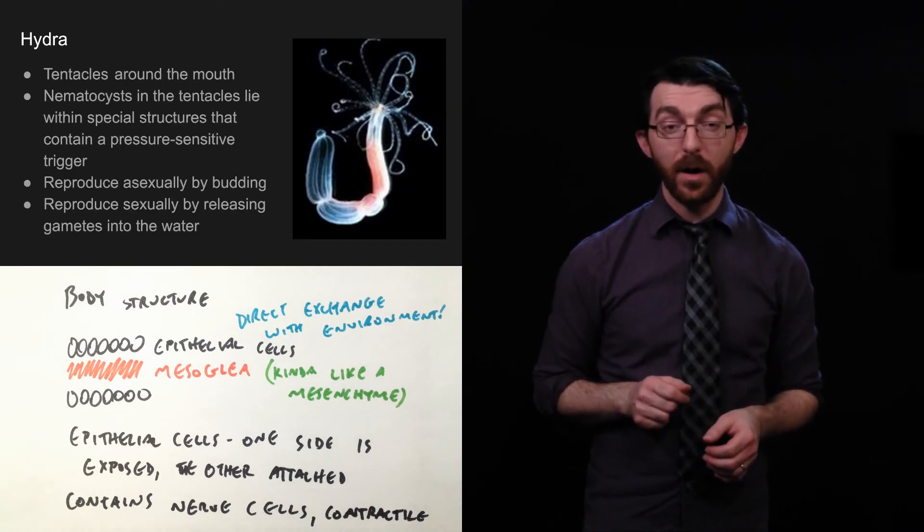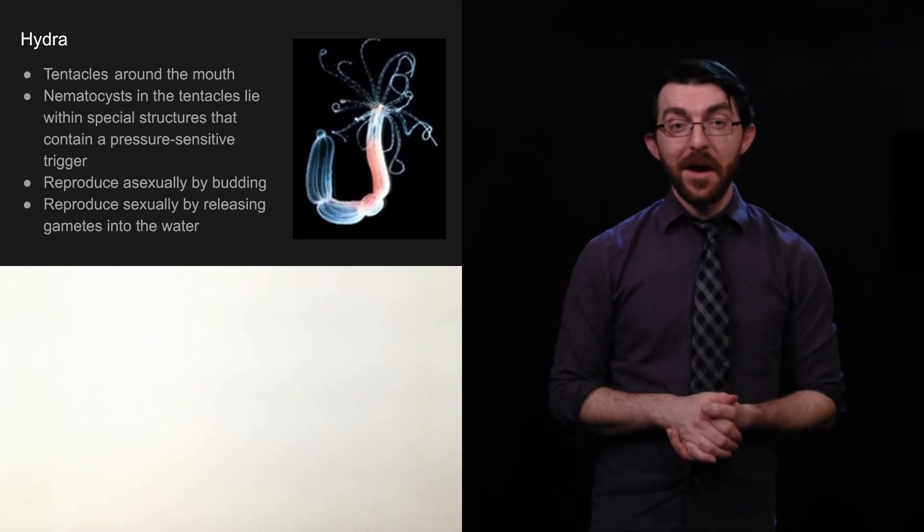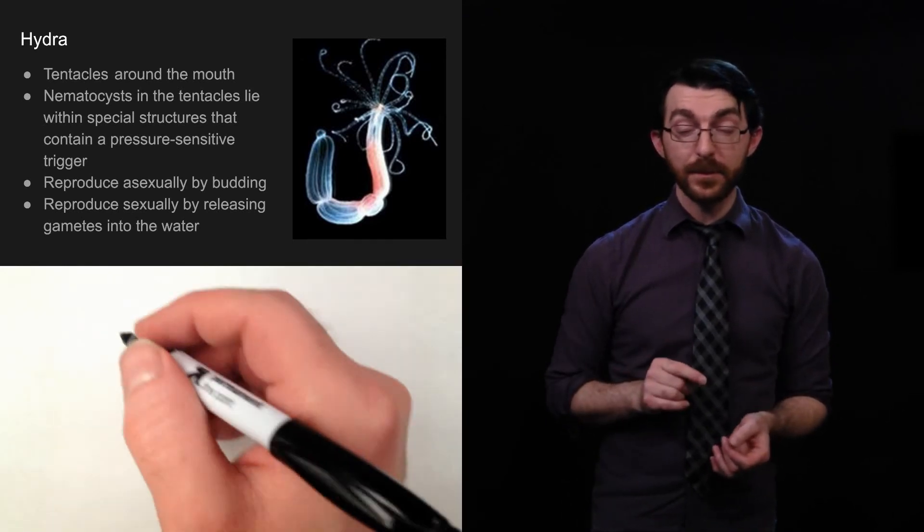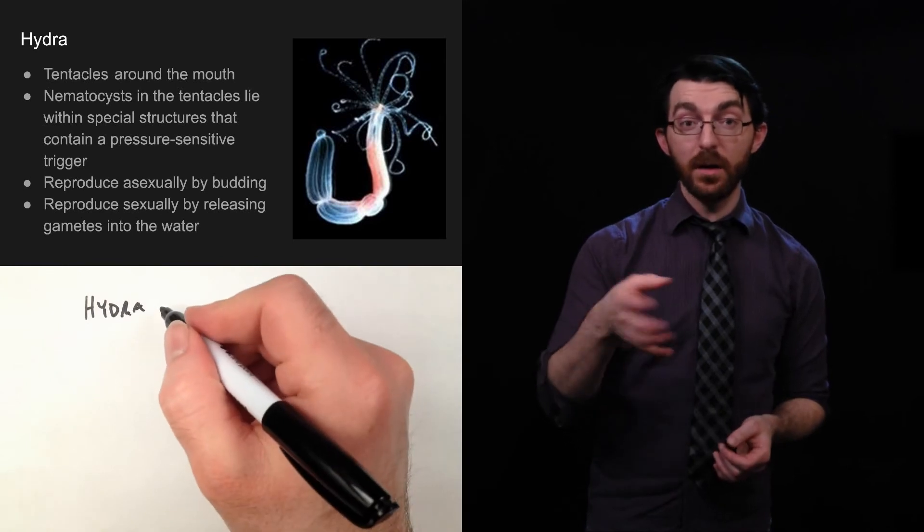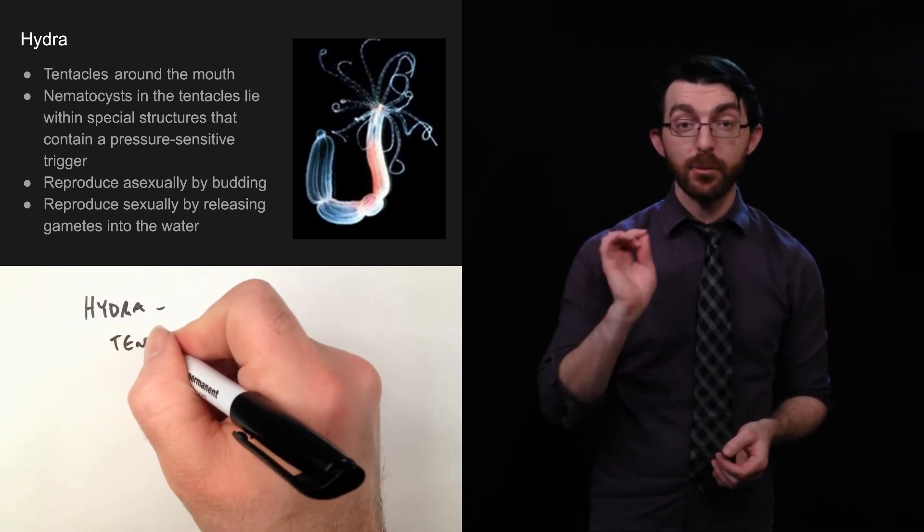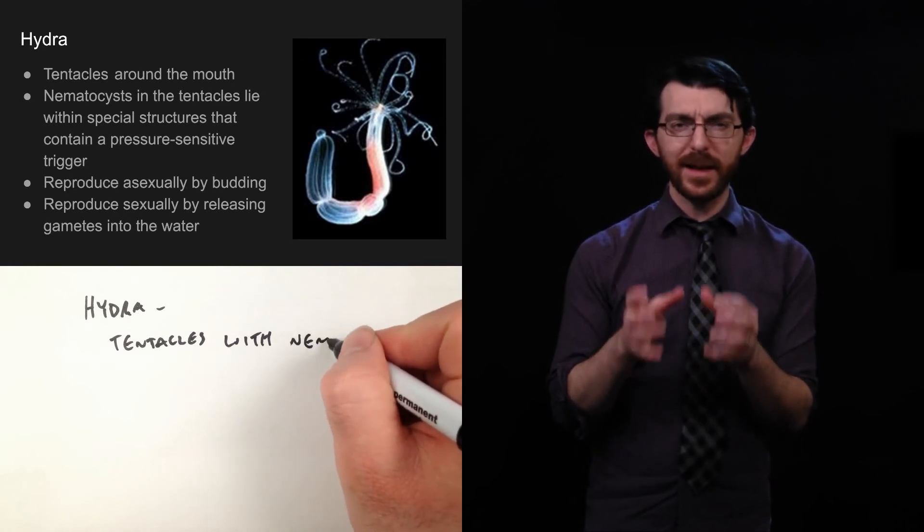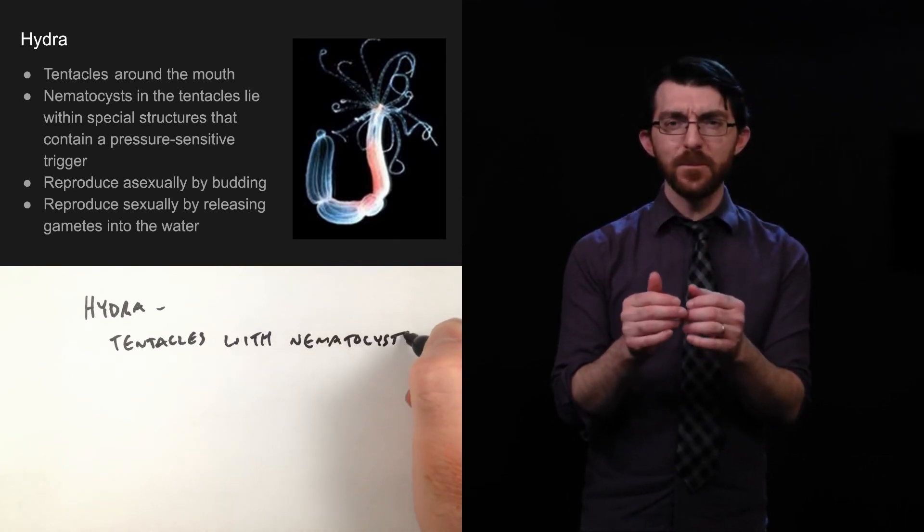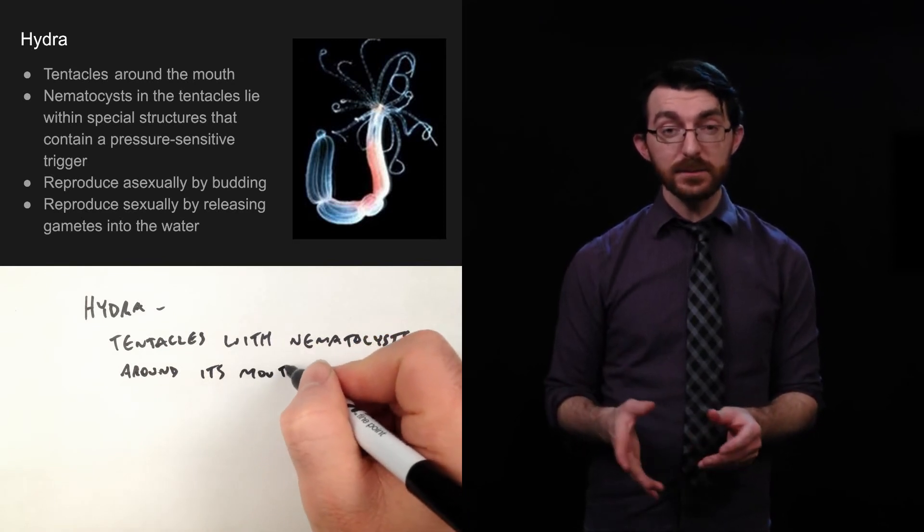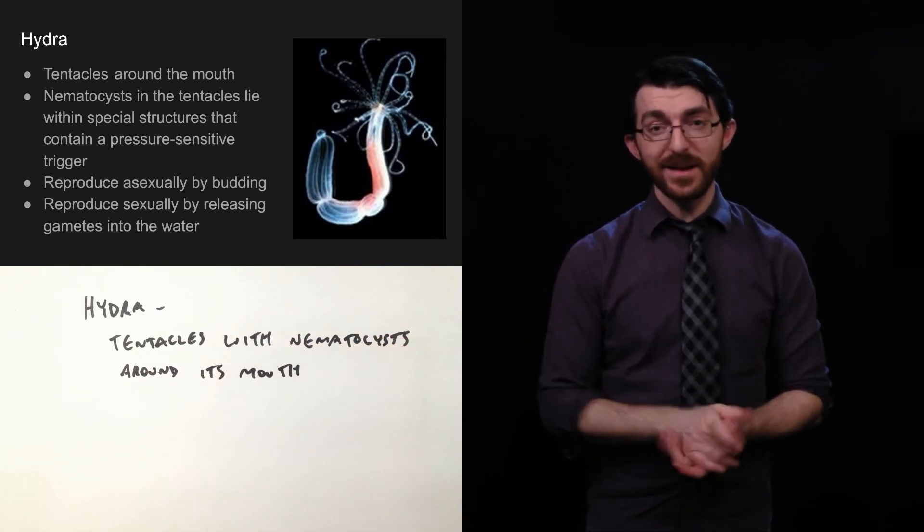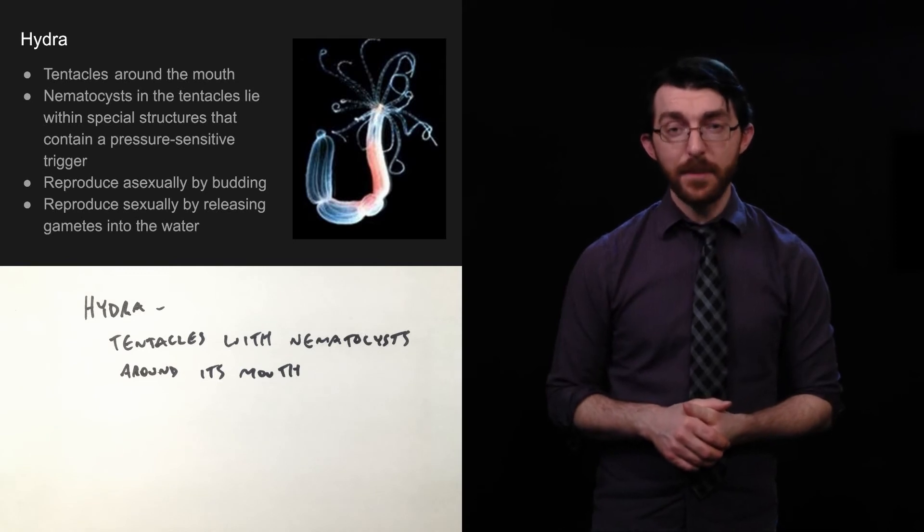We can move on now to a hydra, also part of phylum cnidaria. So, it has tentacles around its mouth. They also have nematocysts. Remember, those are those capsules of toxins in the tentacles of jellyfish. They are in the tentacles of a hydra. They lie within special structures that contain a pressure-sensitive trigger. What this means is it will release those nematocysts, but not like as a conscious choice. It is a reflex. We talked about reflexes with plants when we were referring to nastic movements. Sometimes what your body does, it does by itself without a decision or a conscious choice. And in the particular case of a hydra, the release of its nematocysts are like that.